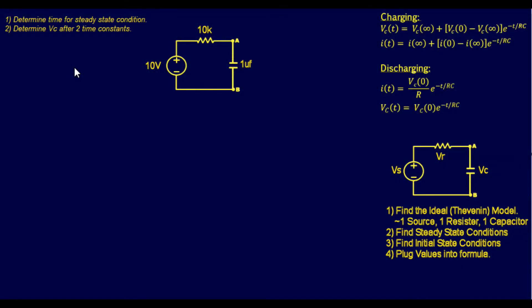For this first problem we'll start with a relatively easy one. Step one is to find the ideal Thevenin model — one source, one resistor, and one capacitor. This circuit already has one voltage source, one resistor, and one capacitor, so step one is already complete.